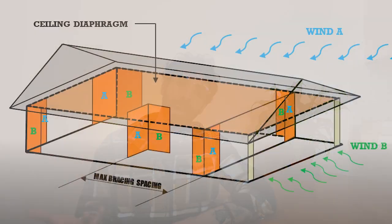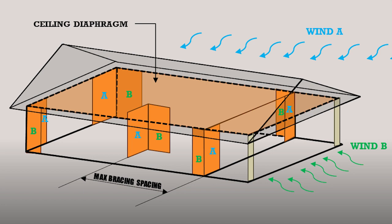The maximum spacing of these bracings is according to the diaphragm requirements, as we have seen in our previous lesson. A braced wall resists forces which are applied parallel to its length, so bracings A withstand wind from direction A and bracings B from wind direction B. Now let me tell you a quick story before we proceed — we design houses for gust wind speeds, and gusts might only last one or two seconds.